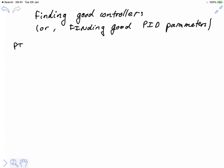For most people, they will say this is a PID controller even if there is no derivative action, or even if there is no integral action. Most people will think of PID as being the box, and then there are knobs for P, I, and D, and one of the positions of those knobs is off.